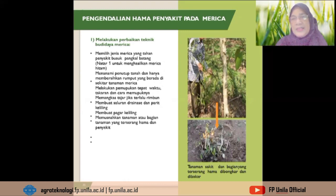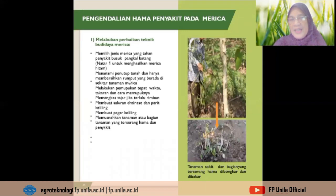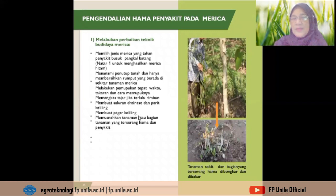Secara umum pengendalian hama dan penyakit pada merica yaitu melakukan perbaikan teknik budidaya merica: memilih jenis merica yang tahan penyakit busuk pangkal batang seperti jenis natar satu untuk menghasilkan merica hitam, menanami penutup tanah dan hanya membersihkan rumput di sekitar tanaman merica, melakukan pemupukan tepat waktu sesuai takaran, memangkas tajar jika terlalu rimbun, membuat saluran drainase dan parit keliling, membuat pagar keliling, serta memusnahkan tanaman atau bagian tanaman yang terserang hama dan penyakit.